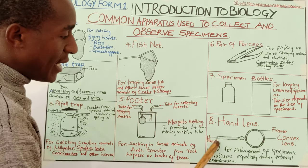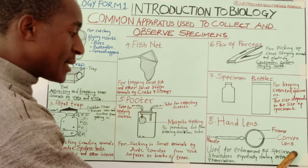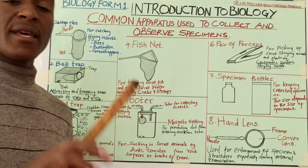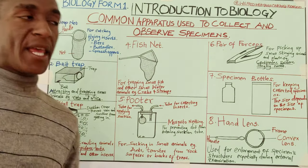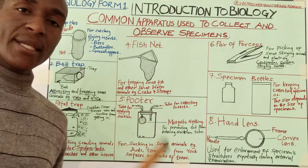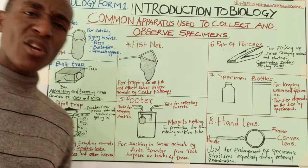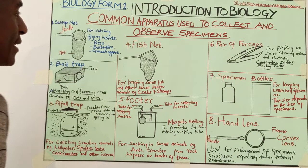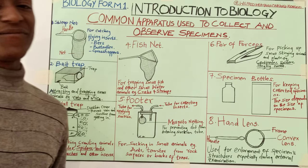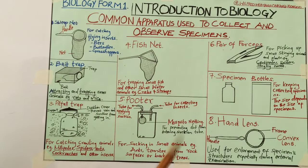The hand lens is used for enlargement of specimen structures, especially during external examination. For example, if you want to observe a cockroach or a grasshopper, you use the hand lens to enlarge the parts — for example, the legs, wings, and antennae. All eight apparatus we have looked at can be categorized: some are used for collection, others for handling, and others for observation.